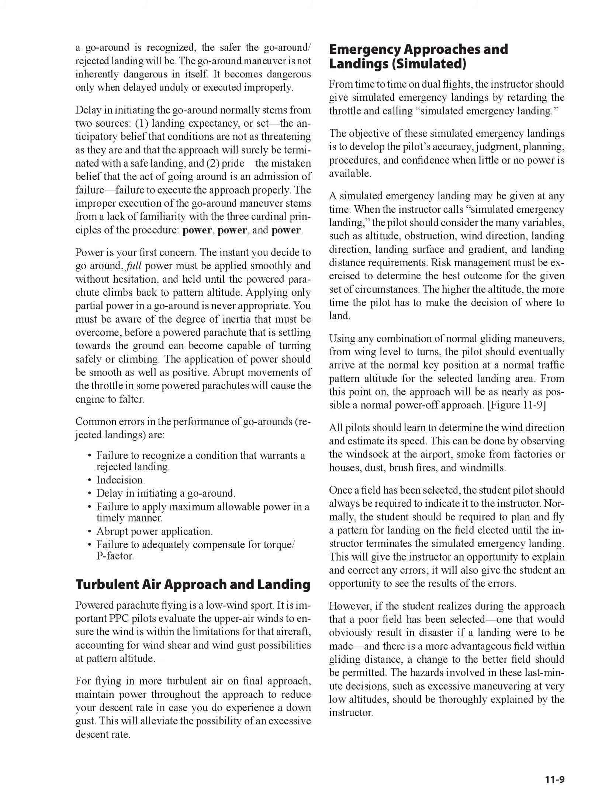Power is your first concern. The instant you decide to go around, full power must be applied smoothly and without hesitation, and held until the powered parachute climbs back to pattern altitude. Applying only partial power in a go-around is never appropriate. You must be aware of the degree of inertia that must be overcome before a powered parachute that is settling toward the ground can become capable of turning safely or climbing. The application of power should be smooth as well as positive, as abrupt movements of the throttle in some powered parachutes will cause the engine to falter.